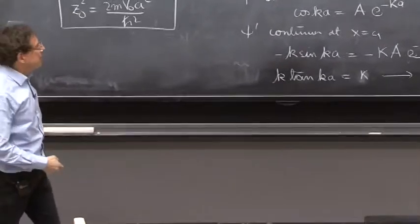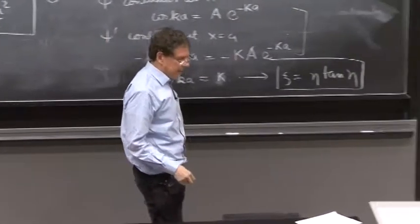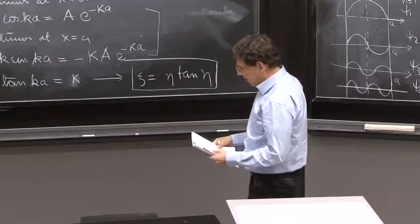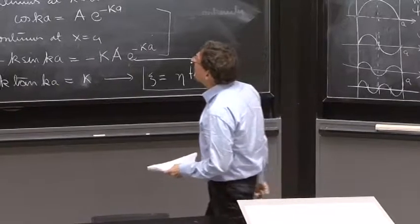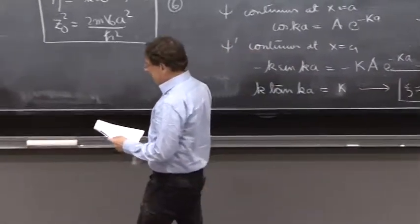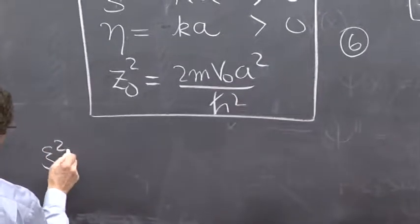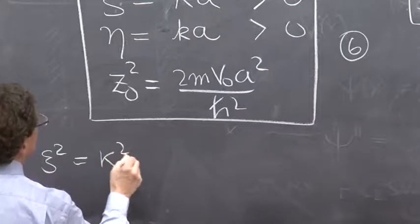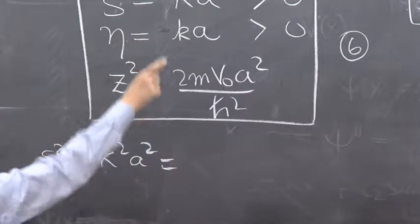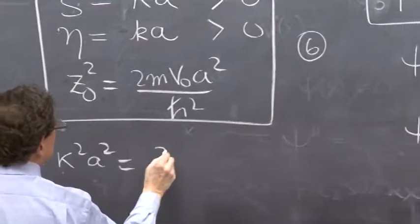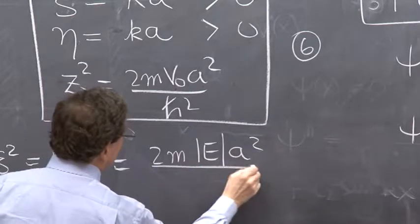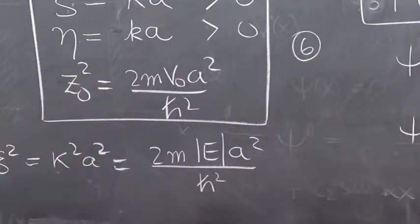So it's kind of neat to express this more clearly. And I think it's maybe easier if one uses ψ. And look at ψ squared is κ squared times a squared. And what is κ squared? 2m, absolute value of e, a squared over ℏ squared.